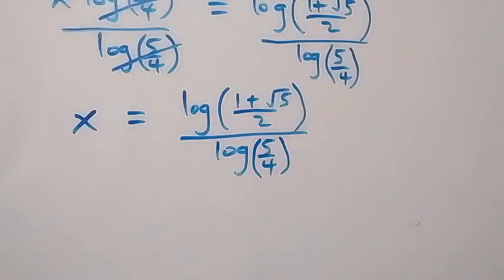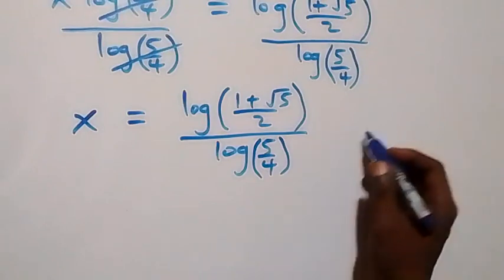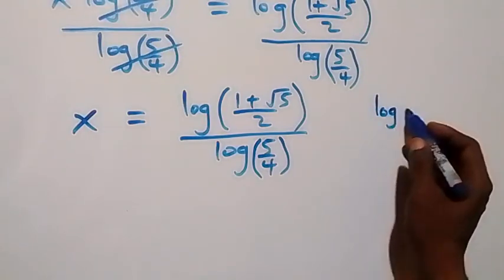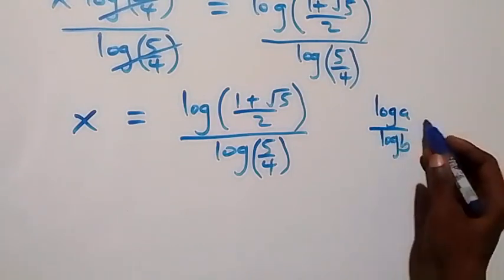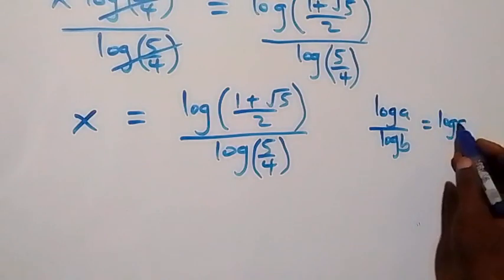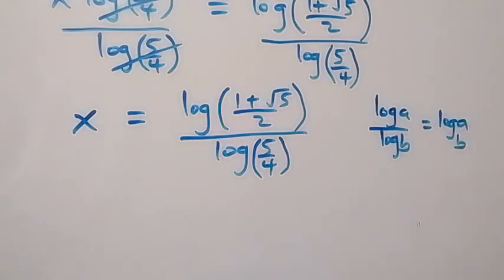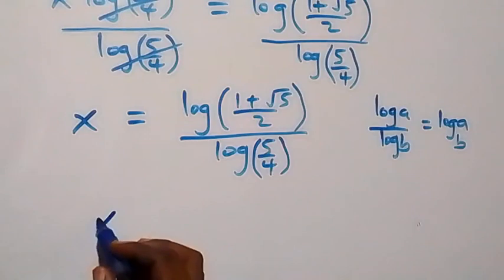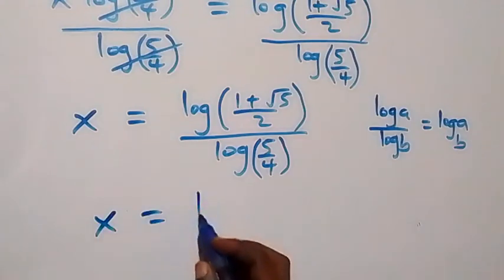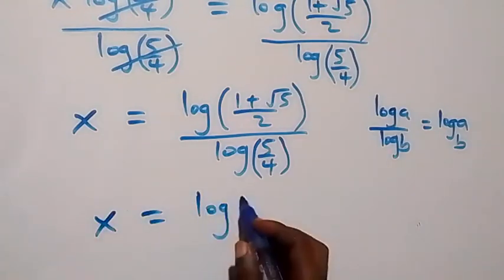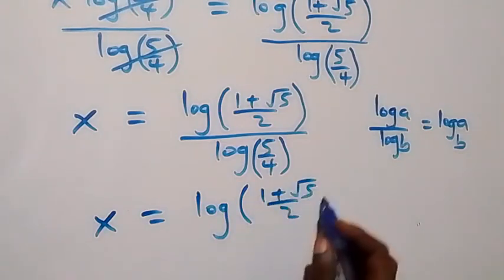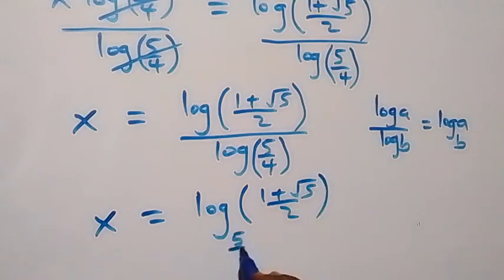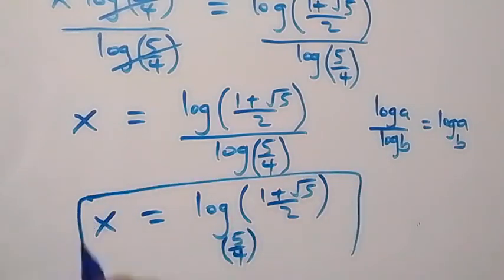If we like, we can apply the change of base formula: log a over log b is the same as log a to base b. So we can write x equals log base (5/4) of ((1 + √5)/2), and that is the solution to this given problem.